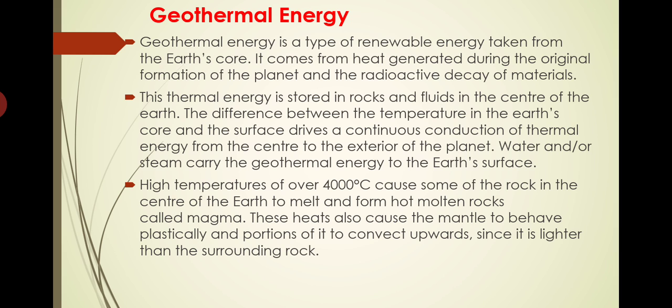The high temperature of over 4000 degrees Celsius causes some of the rock in the center of the earth to melt and form hot molten rocks called magma. Around 4000 degrees Celsius is the inner core temperature, and at that high temperature even the rocks in the inner core will melt. That molten state consisting of everything is known as magma.